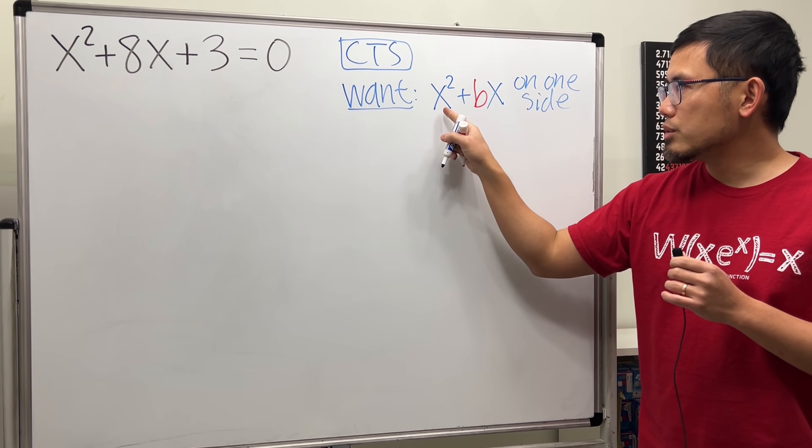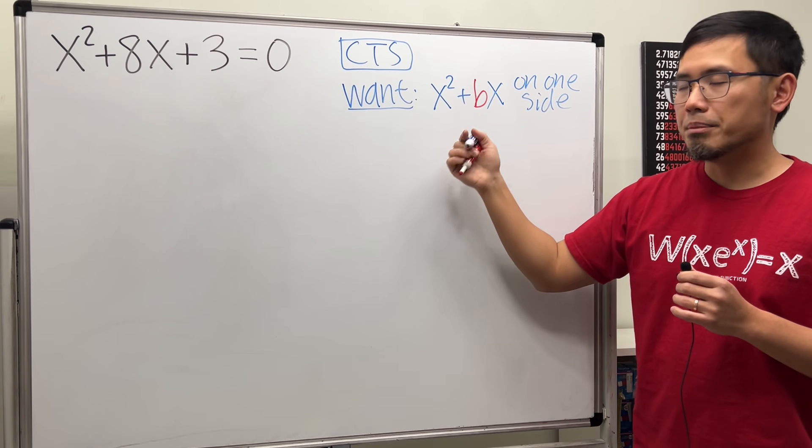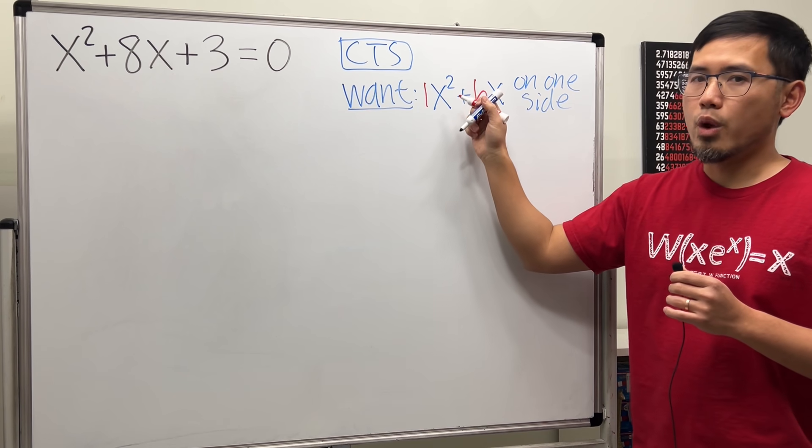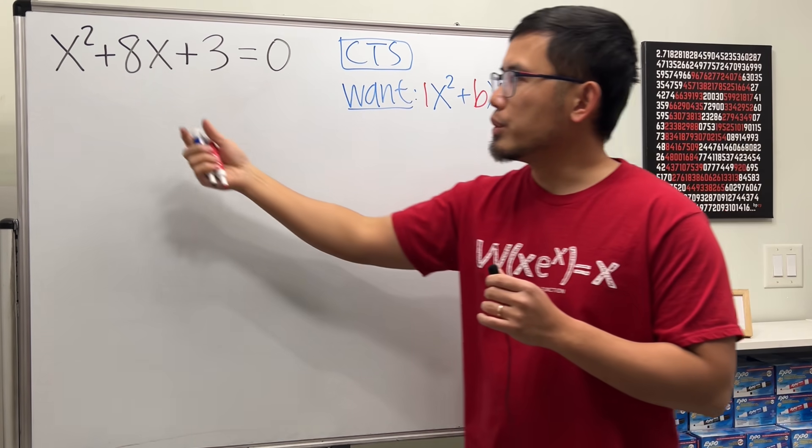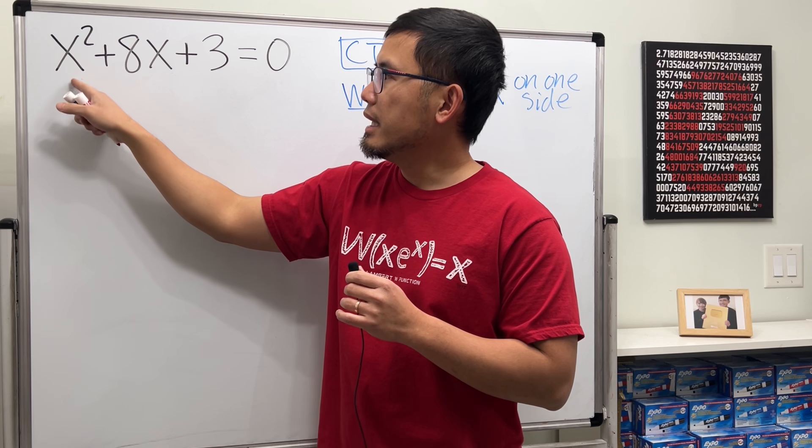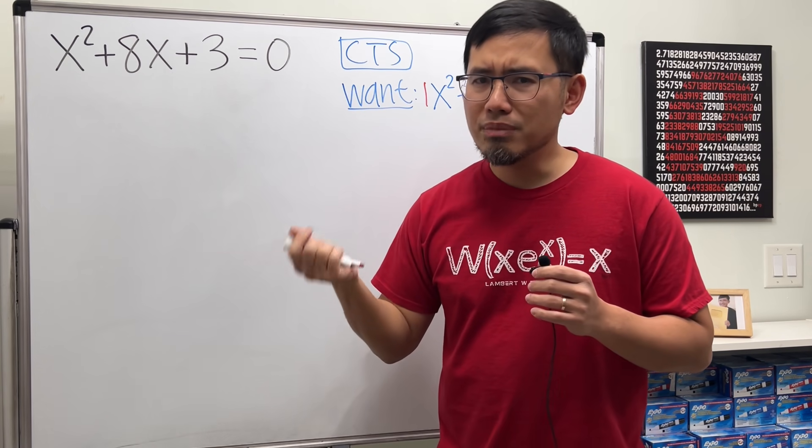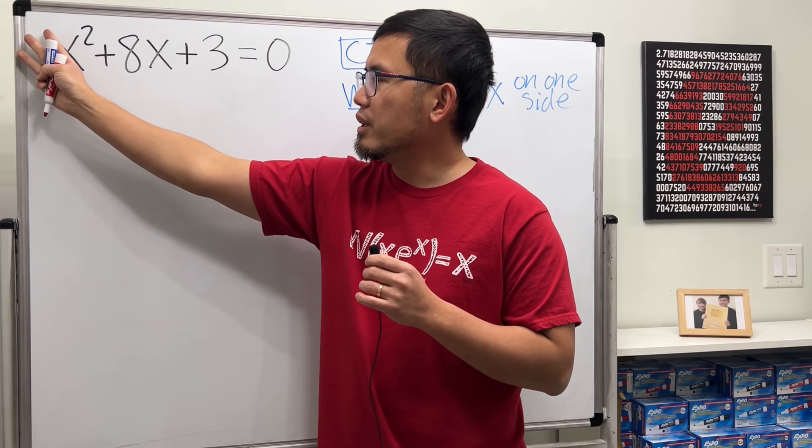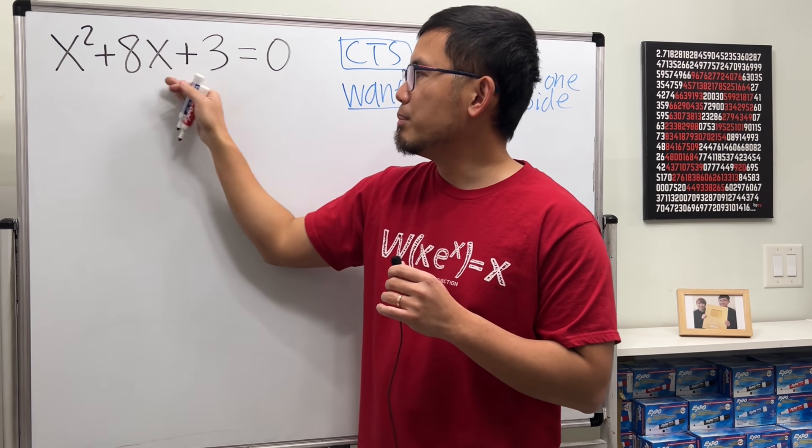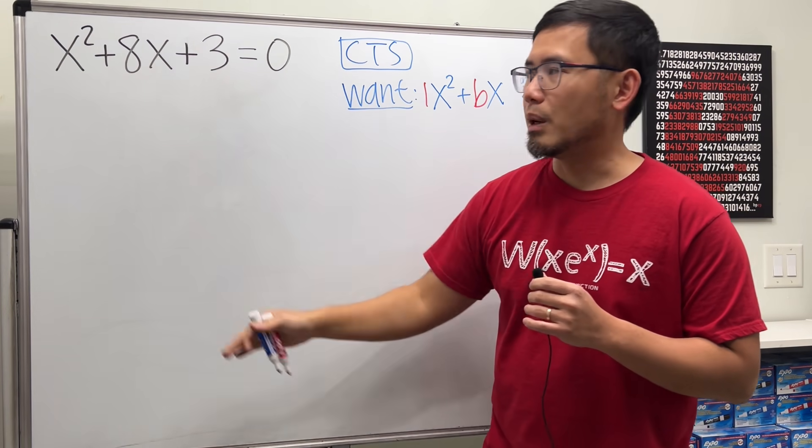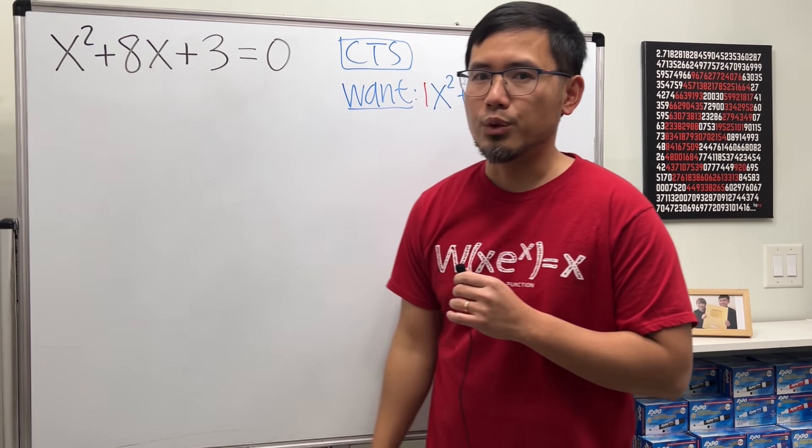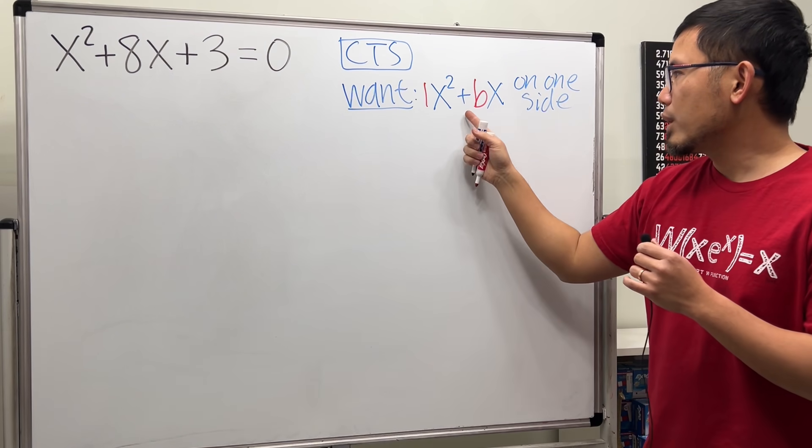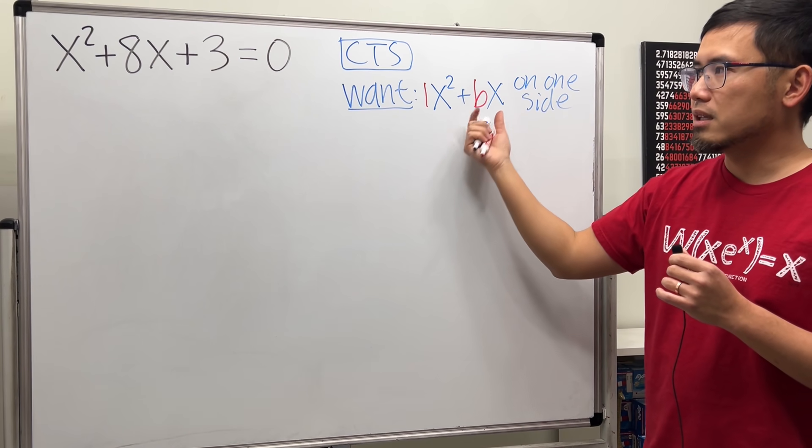And notice how I just wrote x² which I meant one x², and if we go back to here we do have a one x² which is great. But you know sometimes you might have a three here, then in that case just divide everybody by three and then proceed. But we don't have to do that here because we have a one already.